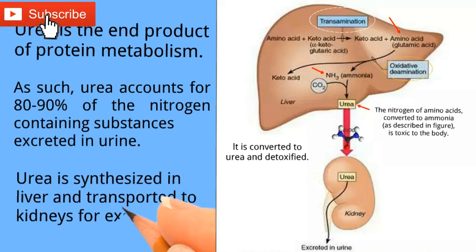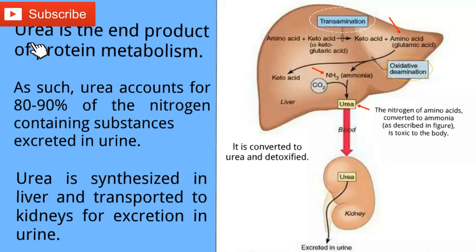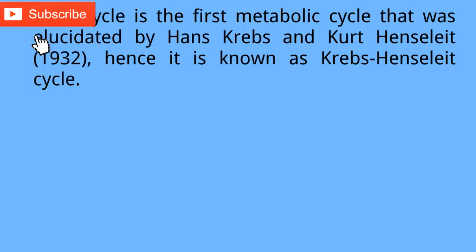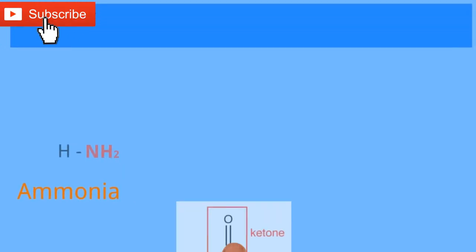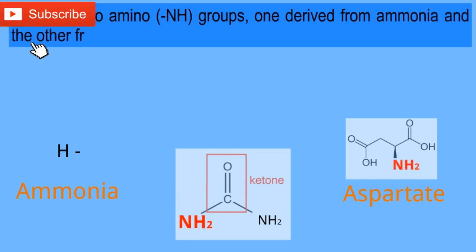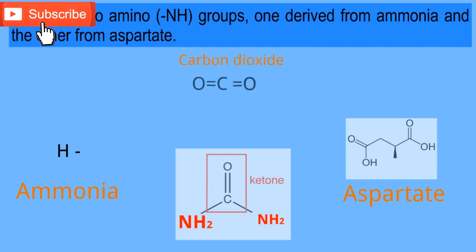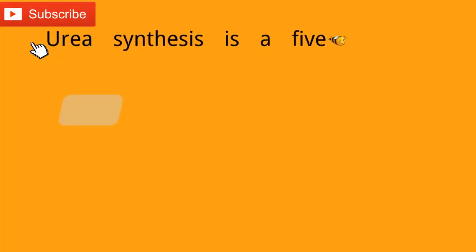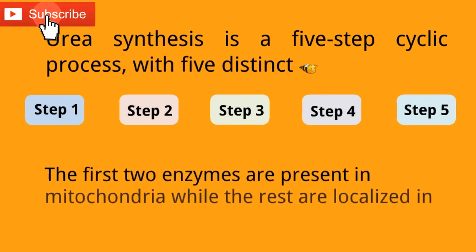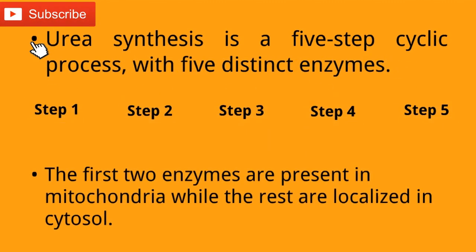Urea is synthesized in the liver and transported to the kidney for excretion in urine. The Urea Cycle, in honor of Krebs and Henseleit, is also known as the Krebs-Henseleit cycle. Urea has two amino groups: one derived from ammonia and the other from aspartate. The third group, keto, is obtained from carbon dioxide. This is how the molecule of urea is formed. Urea synthesis is a five-step cyclic process with a distinct enzyme. The first two enzymes are located in mitochondria, while the rest are present in the cytosol of the cell.